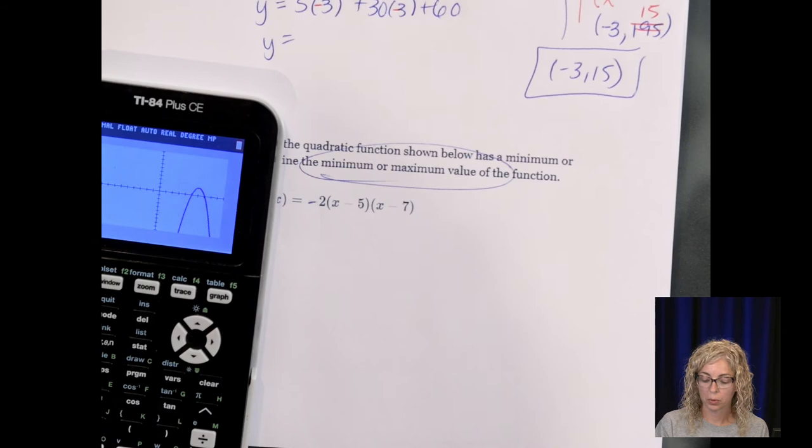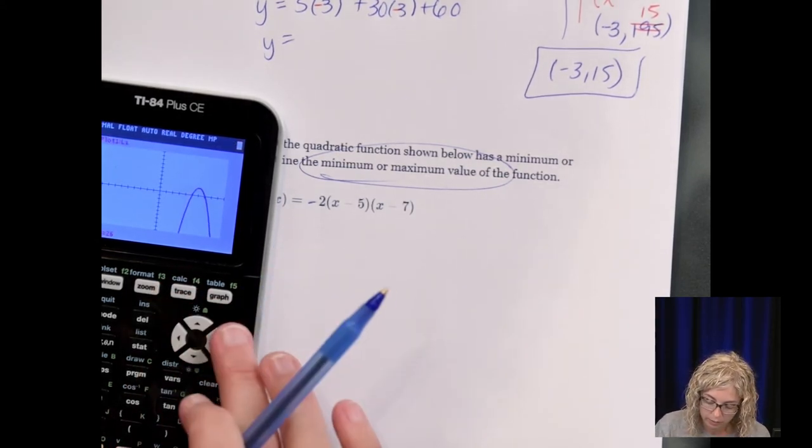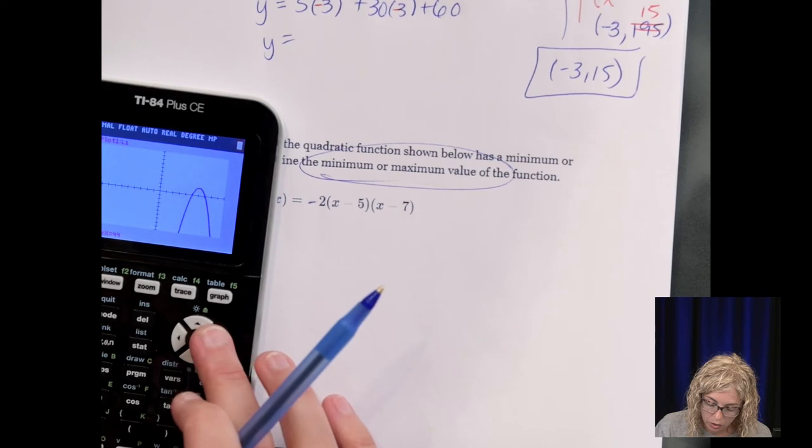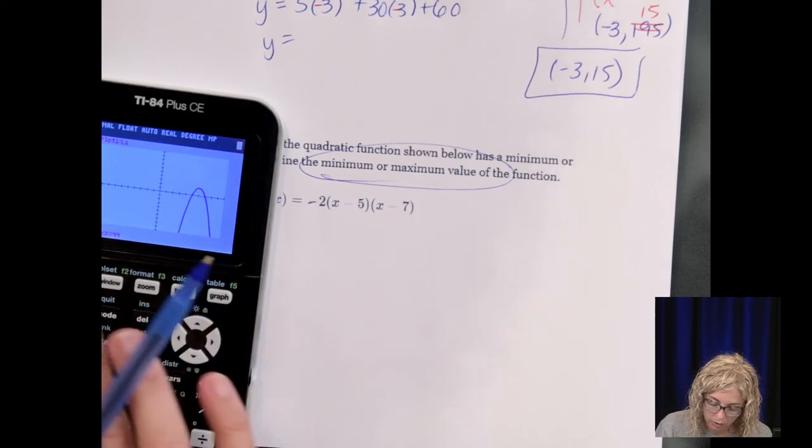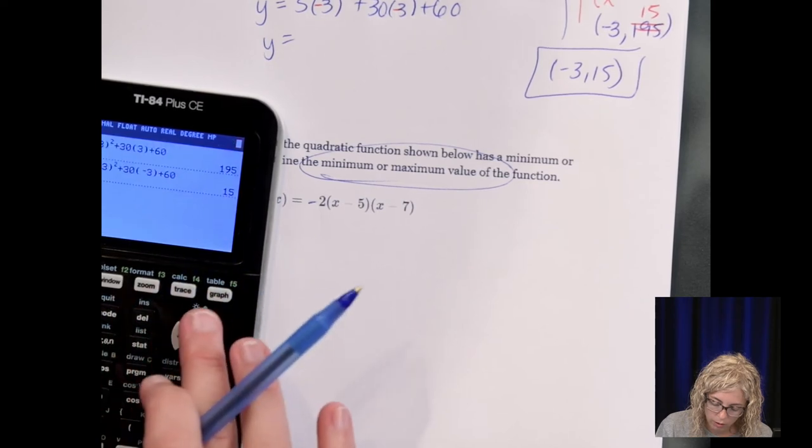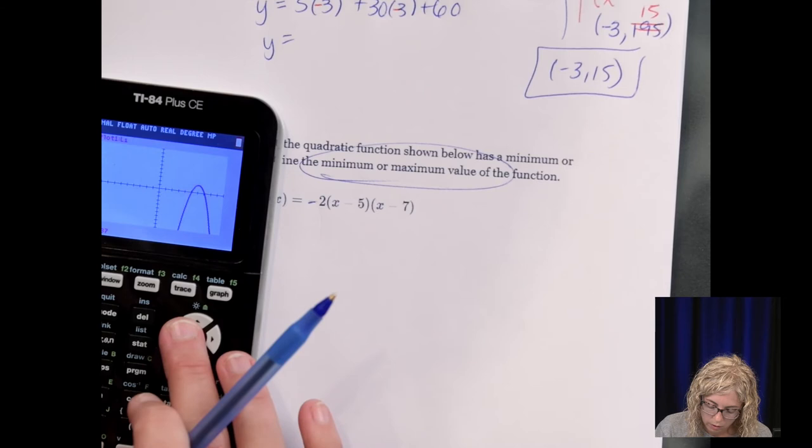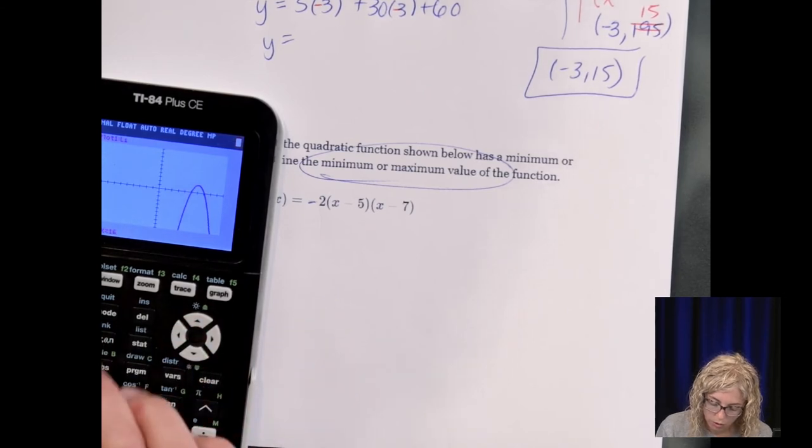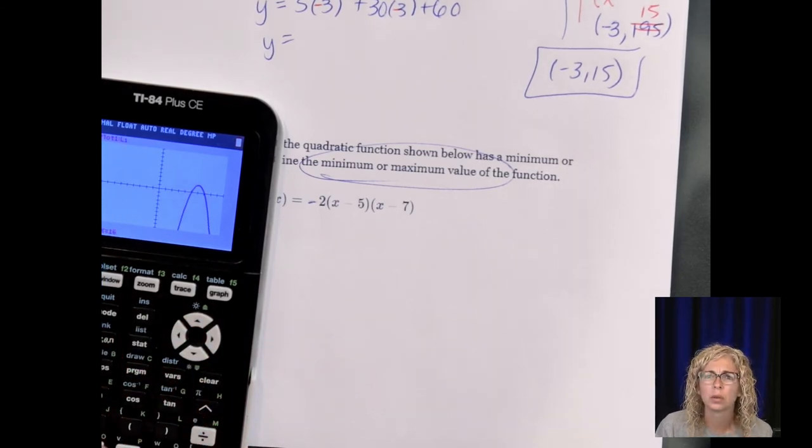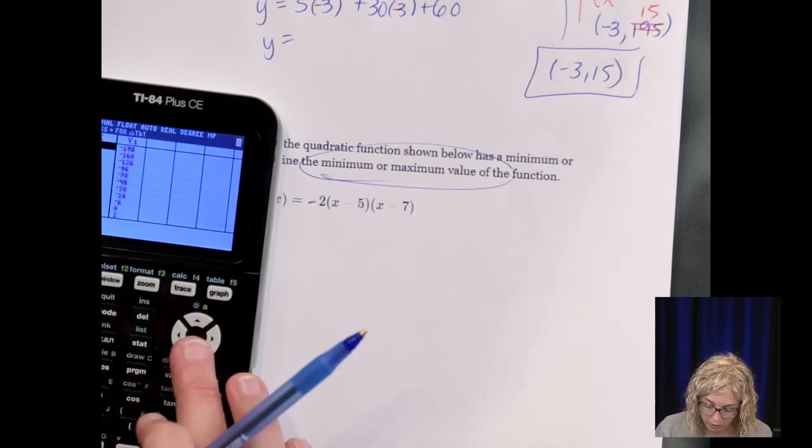Good. If you said upside down, you were right. And then let's go to trace. And let's scroll along. Why isn't trace working? Graph trace. It's scrolling through L1 and L2. I'm not quite sure what's going on my calculator so I'm going to go to a table. And I'm going to look at the vertex.